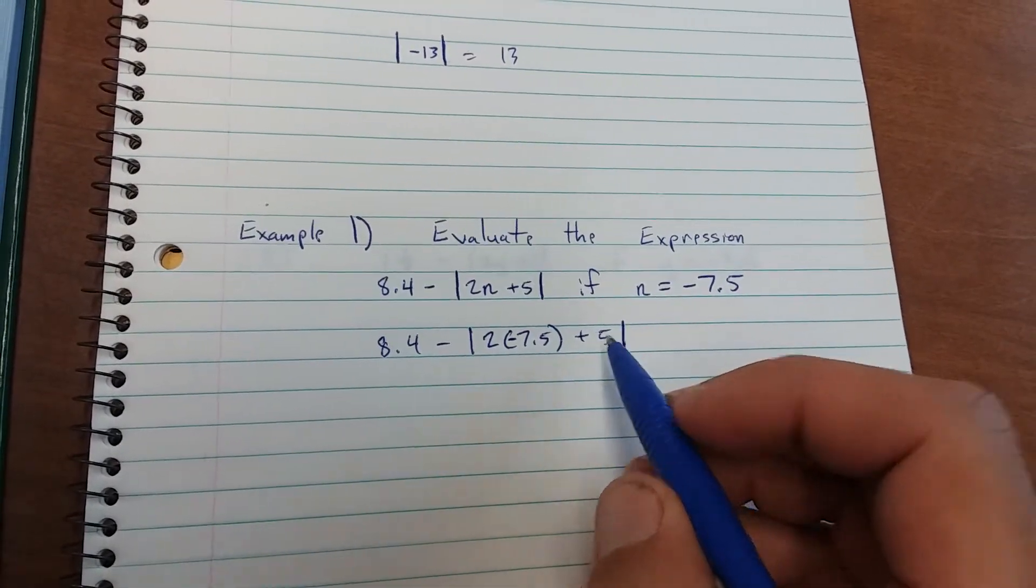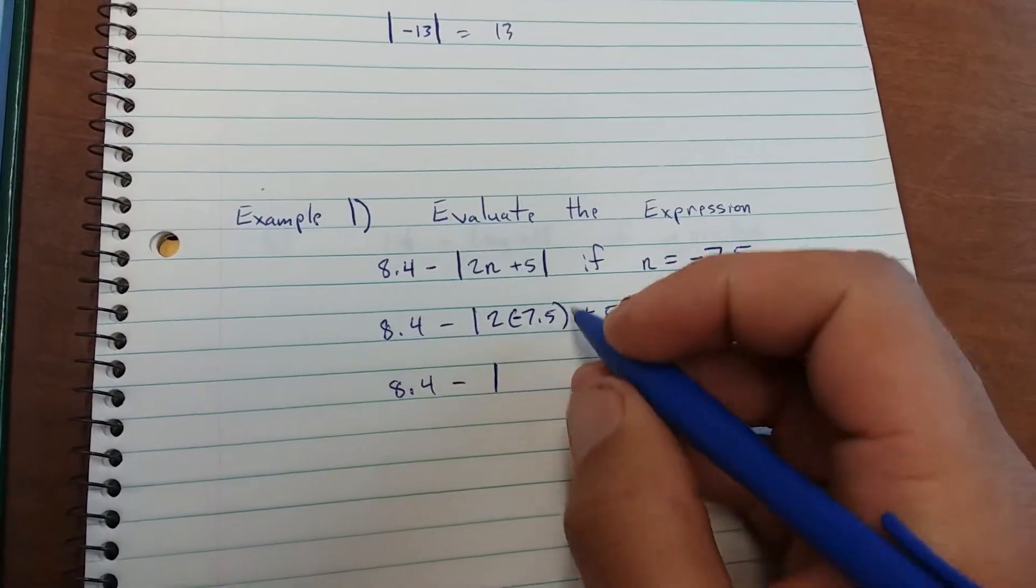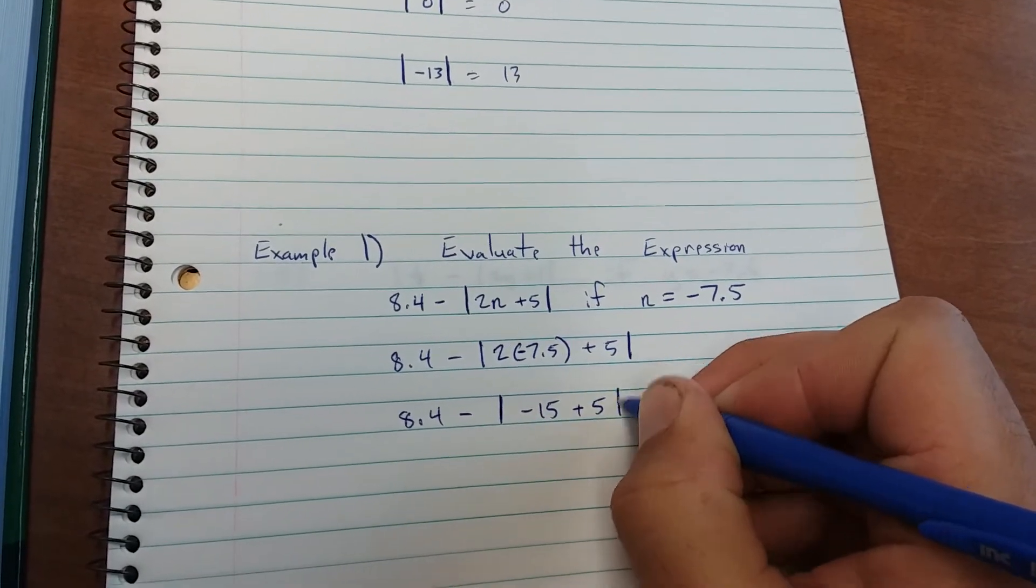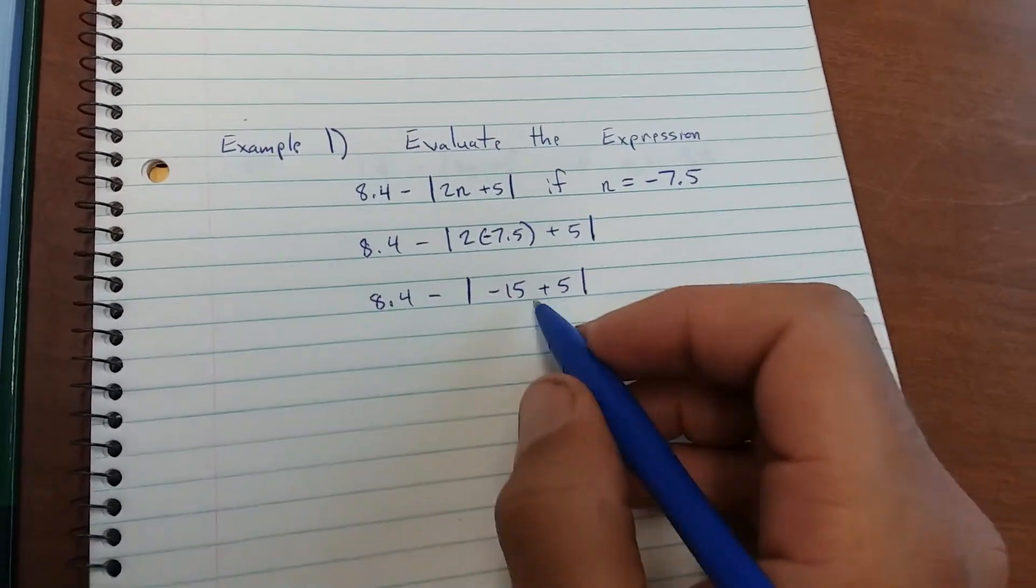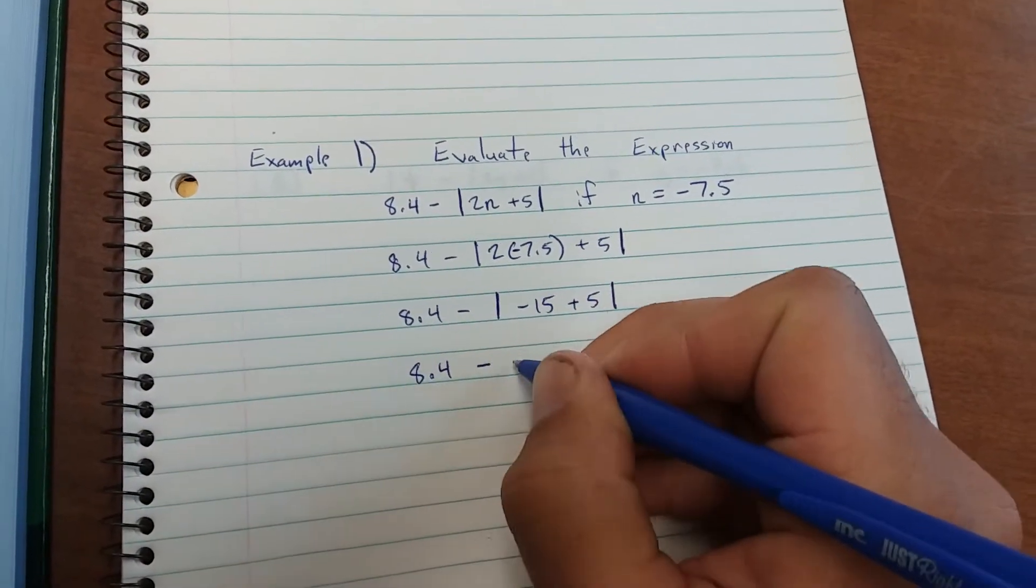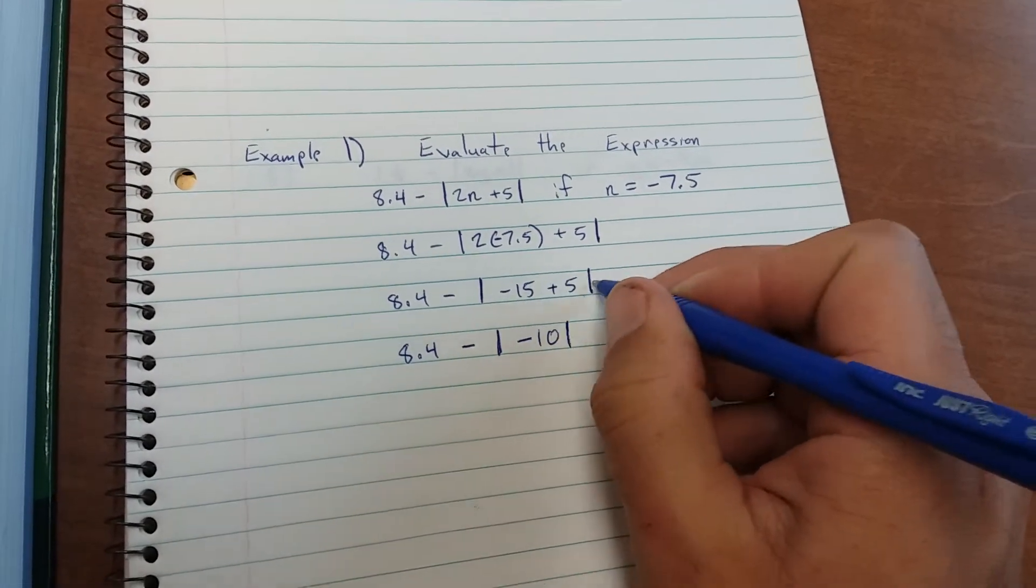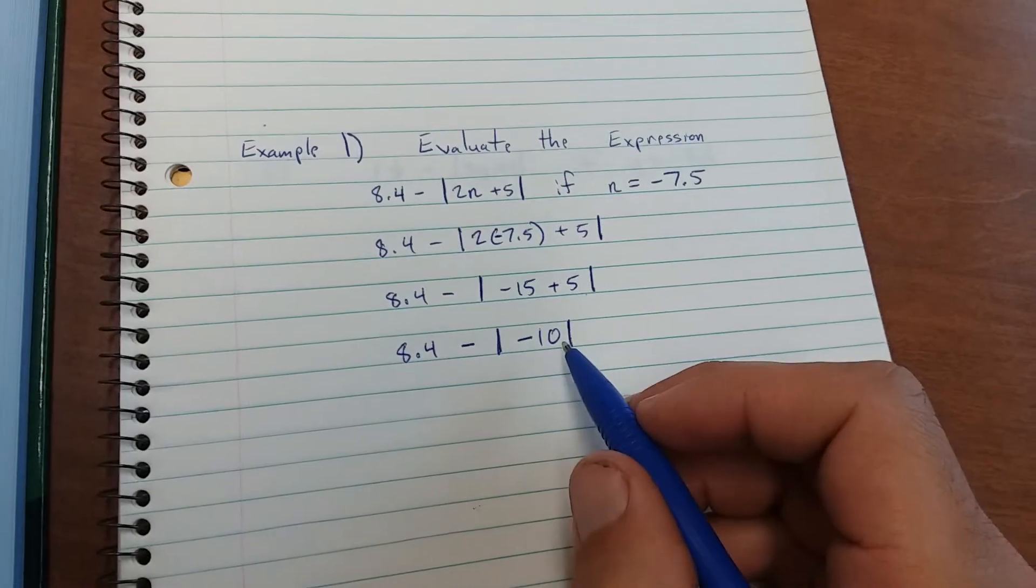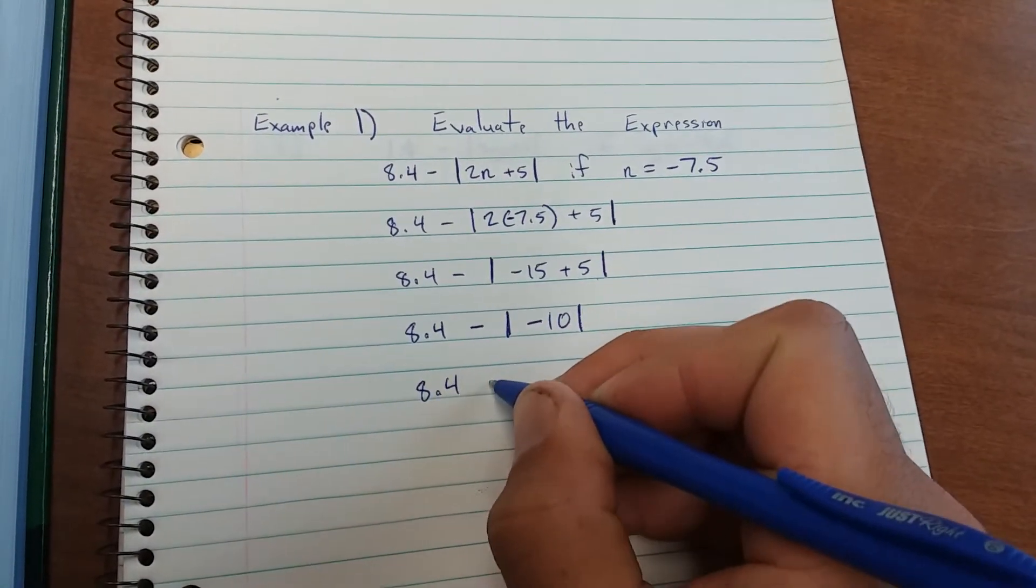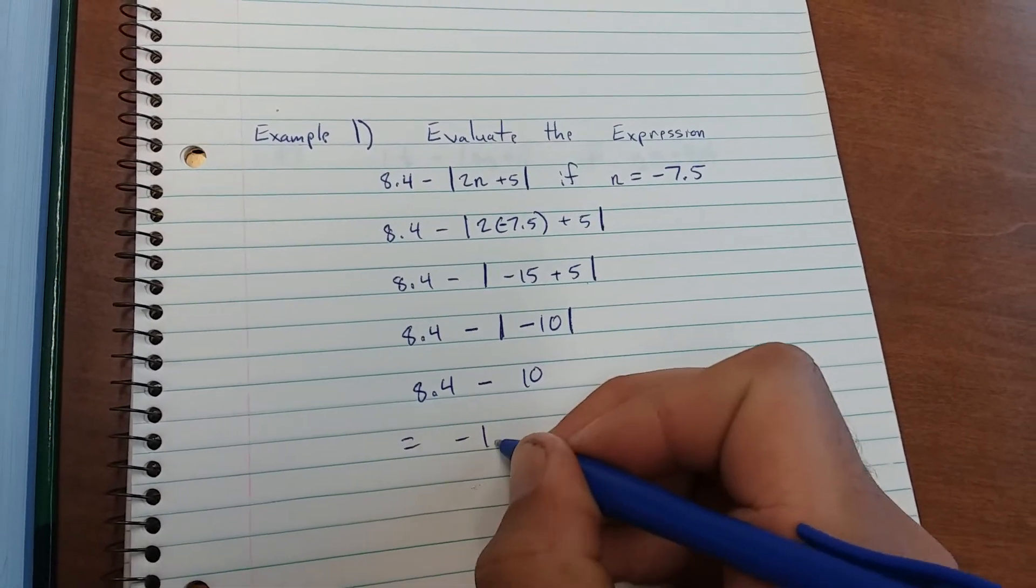We do multiplication before addition. We have 8.4 minus, 2 times negative 7.5 is negative 15, plus 5. Now we can combine the negative 15 and positive 5. 8.4 minus the absolute value of negative 10. The absolute value of negative 10 is positive 10. So you have 8.4 minus 10. 8.4 minus 10 is negative 1.6.